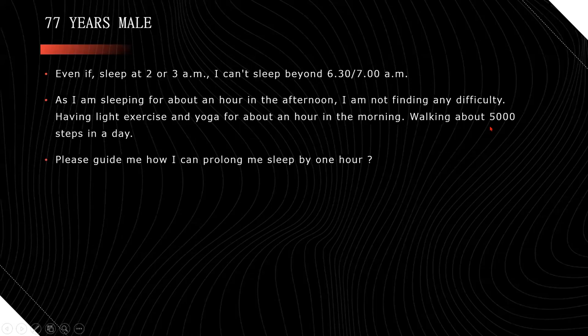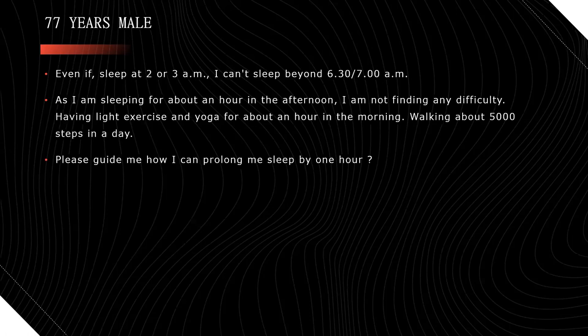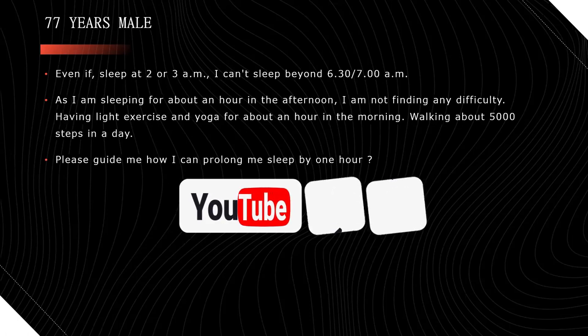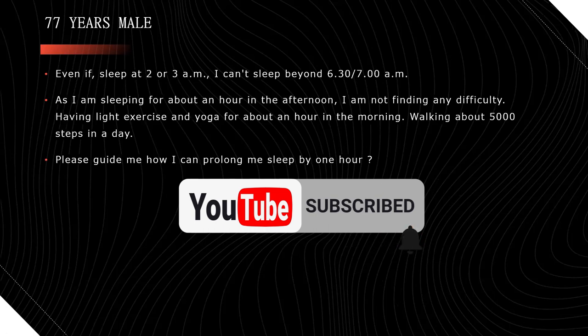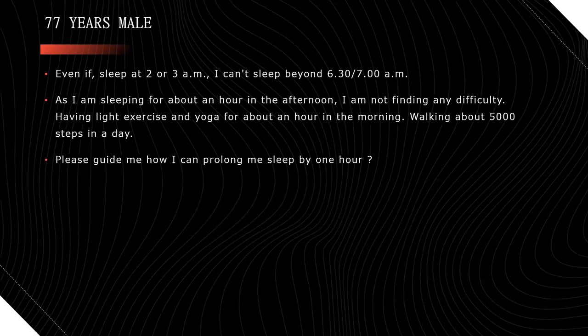Even if I sleep at 2 or 3 am, I can't sleep beyond 6:30 to 7 am. I am sleeping for about an hour in the afternoon and I am not finding any difficulty. Having light exercise and yoga for about an hour in the morning. I am very happy for you sir. At 77 years of age, you are taking out one hour for exercise and yoga - excellent. Walking about 5,000 steps - very nice. Please guide me how I can prolong my sleep by one hour. About this also, I will discuss in coming up slides.